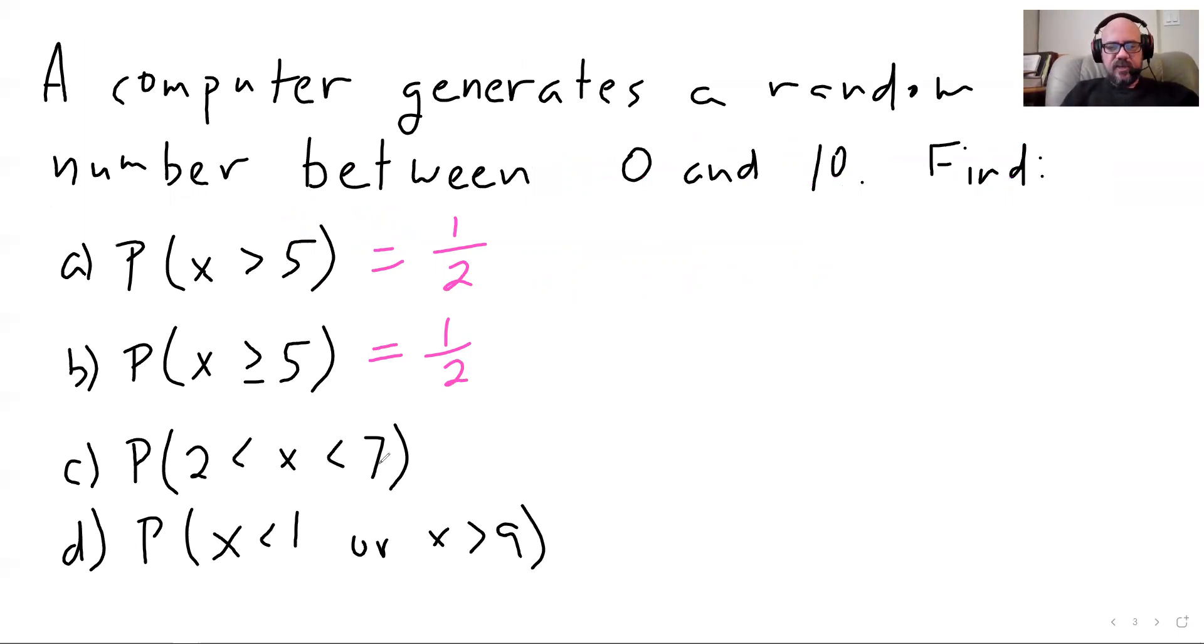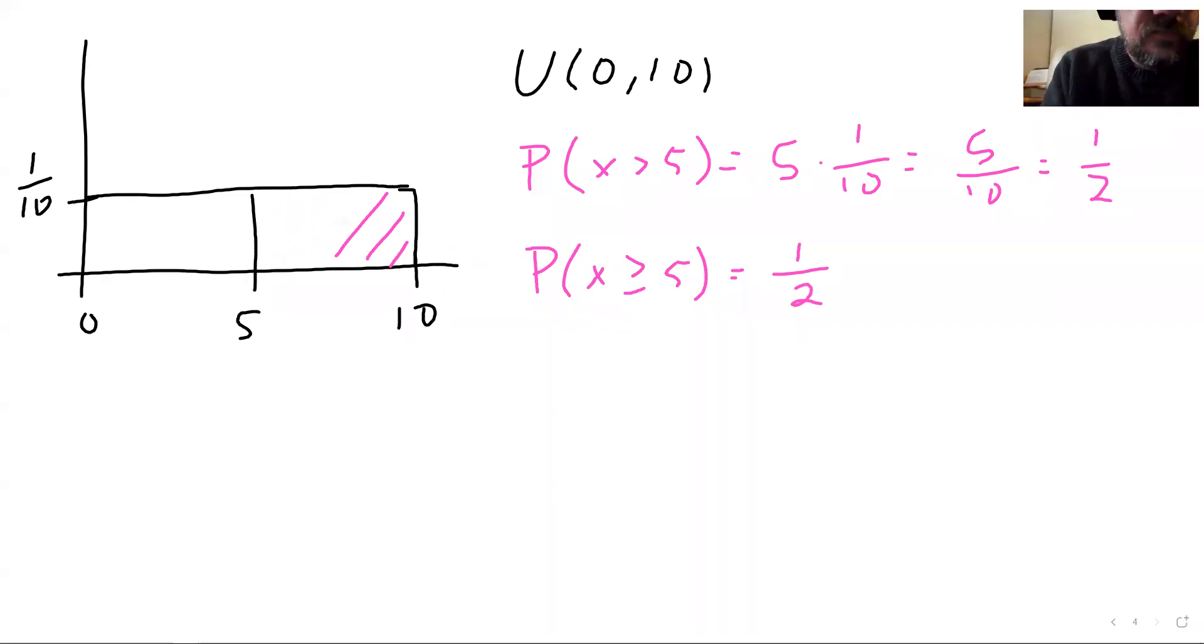Probability that X is between 2 and 7. So bigger than 2 and less than 7. You can read this 2 less than X less than 7, but that's awkward. Probability that X is between 2 and 7. We're going to go from 2 here up to 7, and then we're going to shade that in in pink. This base is 5 and the height is one tenth. So this is 5 times one tenth again. It's a half.